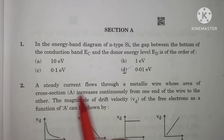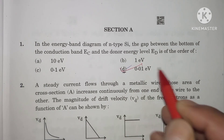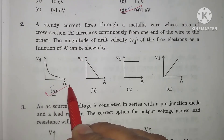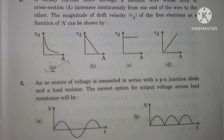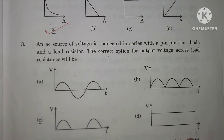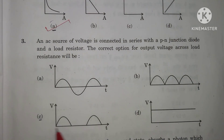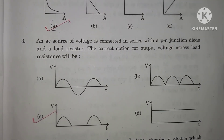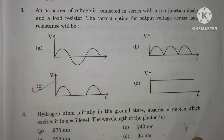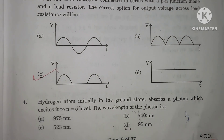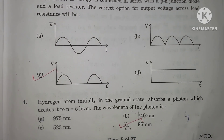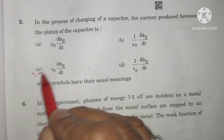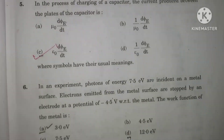In question number 1, D option is the correct option. In question number 2, A option is the correct option. In question number 3, C option is the correct option. In question number 4, D is the correct option. In question number 5, C option is the correct option.